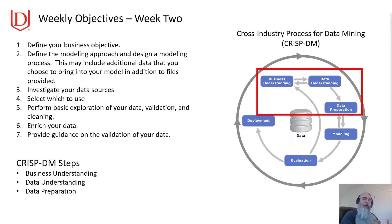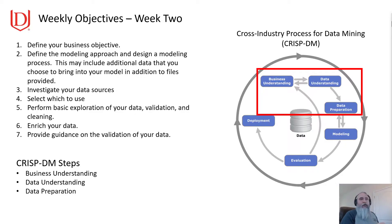We may have additional data we want to include inside our model, so if you have additional files, you want to provide those whenever we're evaluating this. Continuing to investigate the data sources which you're going to use, select which of those to use, and then perform some basic exploration of your data — do the validation, the cleaning, the enrichment on it, and then provide some guidance on what you would do as far as the validation. This is really addressing the first three phases: business understanding, data understanding, and data preparation.